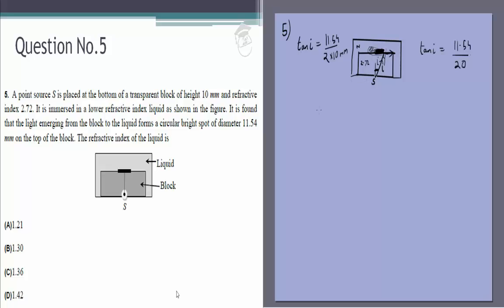then 2.72 into sin i is equal to n into sin r. But sin r would be 1 because it comes out at 90 degrees, so this is basically our answer. Now we'll have to do a little bit of calculation.